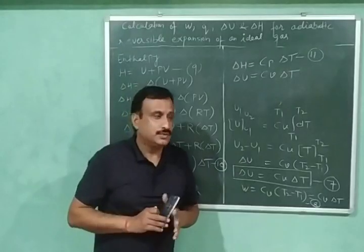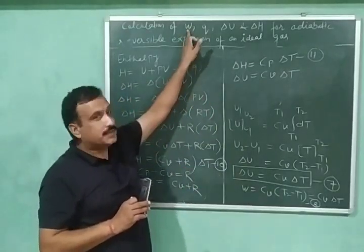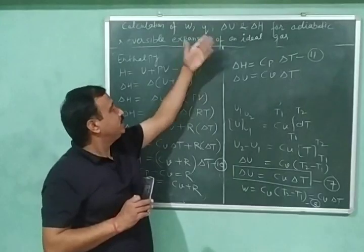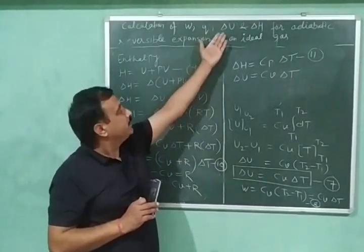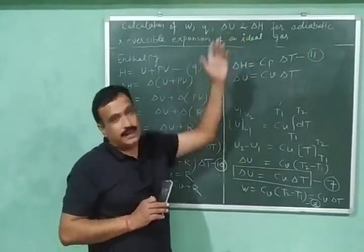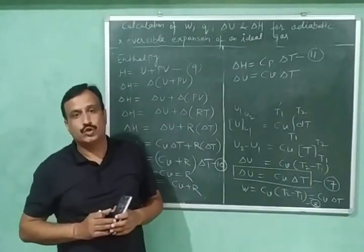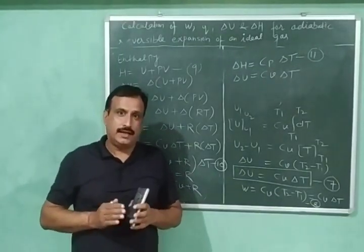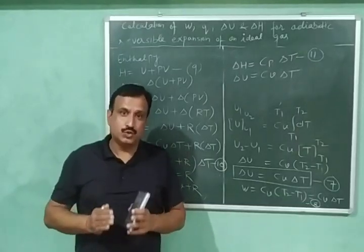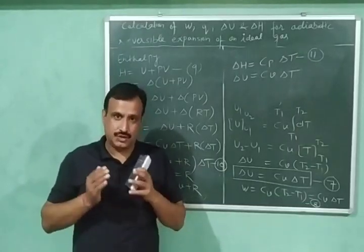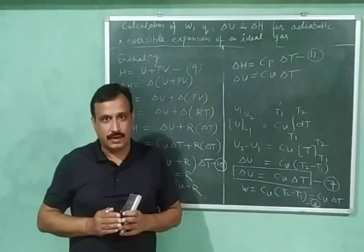So these were the different expressions for work, heat — where Q equals zero in this case — internal energy, and delta H. I hope you have enjoyed today's video. If you have, please like and share my videos and subscribe to my channel. Thank you very much.